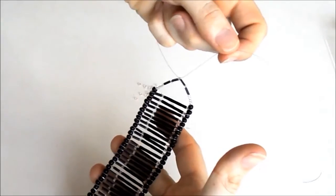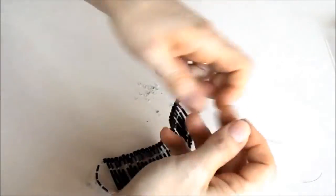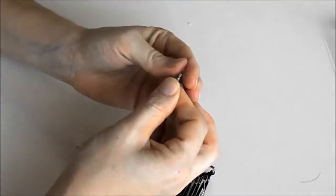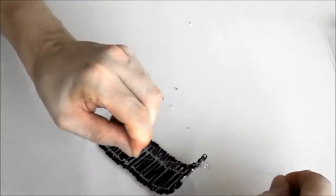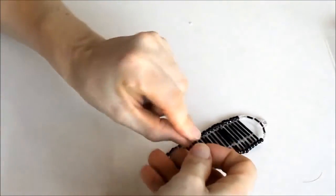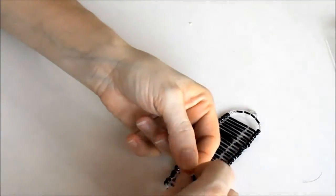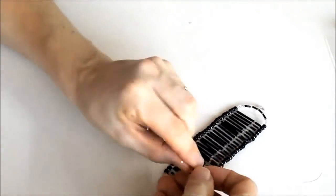Fechei. Agora eu coloco doze miçanguinhas e dou um nó. Dou três nós e escondo as duas pontinhas voltando por dentro das miçangas.